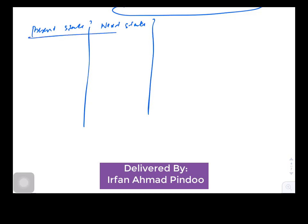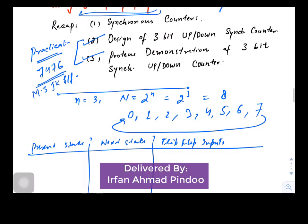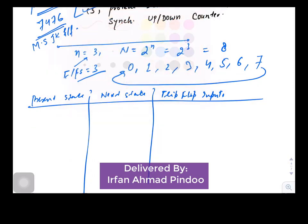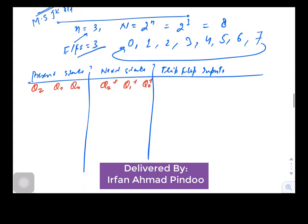We will form a table again where we will write present state, followed by next state, and followed by flip-flop inputs. Since we are using three bits, the number of flip-flops required are also three.